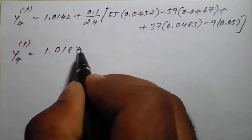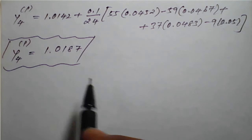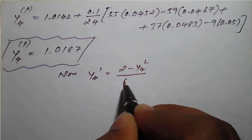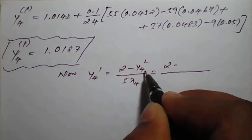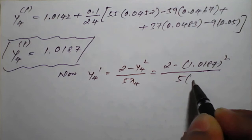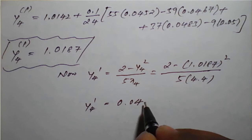The result of y₄(p) is 1.0187. This is our predicted value. Now we find y₄ dash using the predicted value: y₄ dash equal to (2 minus y₄²) divided by (5 times x₄), which is (2 minus 1.0187²) divided by (5 times 4.4). On calculation, y₄ dash equals 0.0437.